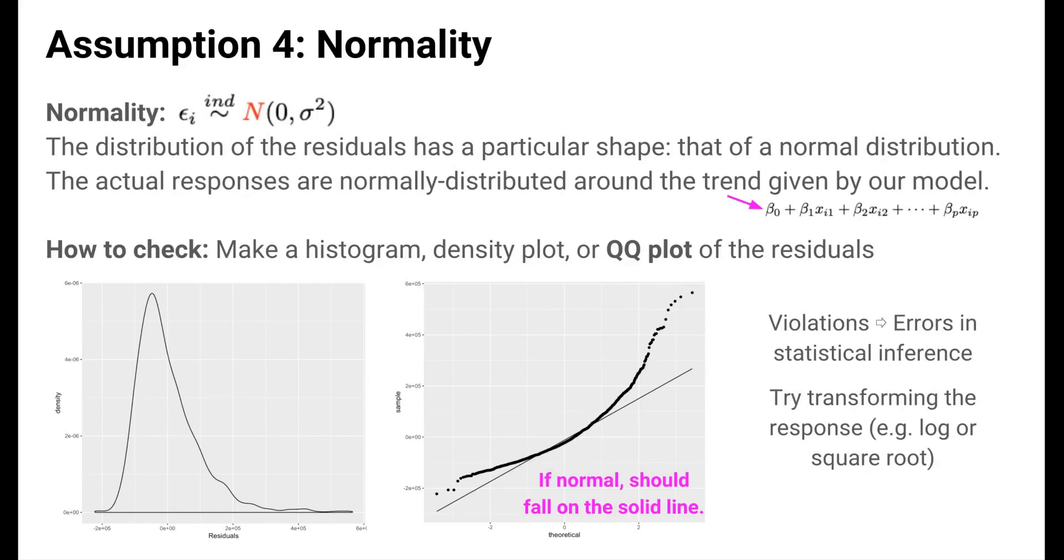The points show the distribution of our residuals, and the line shows what the points would look like if they were normally distributed. If the residuals were normally distributed, they would fall exactly on top of the line. They don't, however, so we can conclude from both the density and the Q-Q plot that the residuals are not normally distributed.